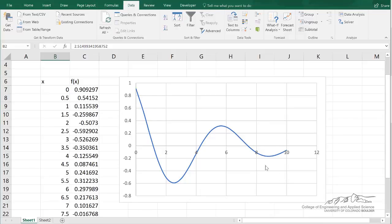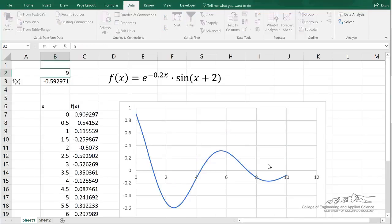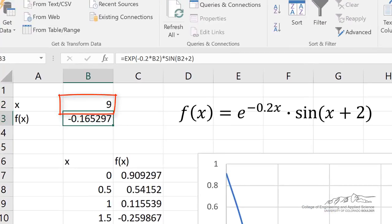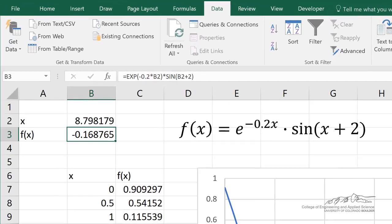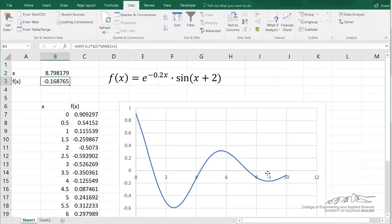So you see there's another minimum here at about x equals 9. If we guess around 9, then we should get the minimum closest to 9. So I'm going to change my initial guess to 9. We can go back into the solver tool. It cranks through and finds the minimum closest to 9, which is 8.8, with a y value of about negative 0.17.